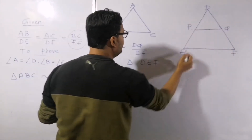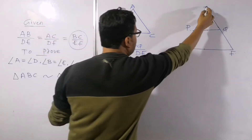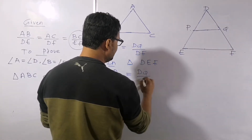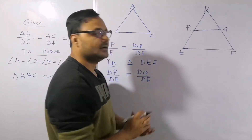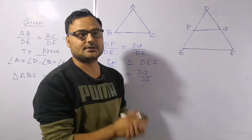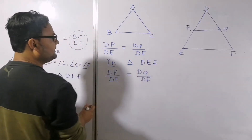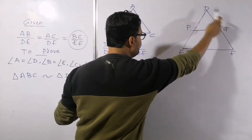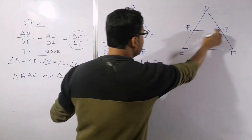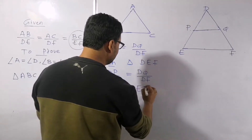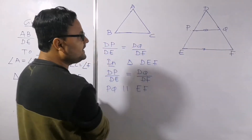Now remember the converse of Thales theorem — the link is in the description box if you need it. In triangle DEF, since DP/DE = DQ/DF, by the converse of Thales theorem we can conclude that PQ is parallel to EF.